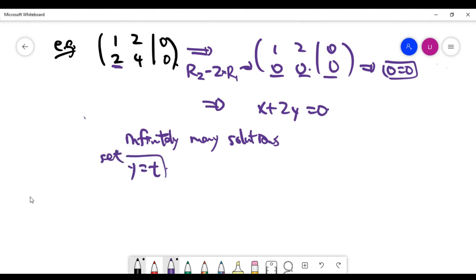By the equations we have, x plus 2t equals zero, which means x is actually negative 2t. So we can present our solution by the parametric form in terms of the parameter t.